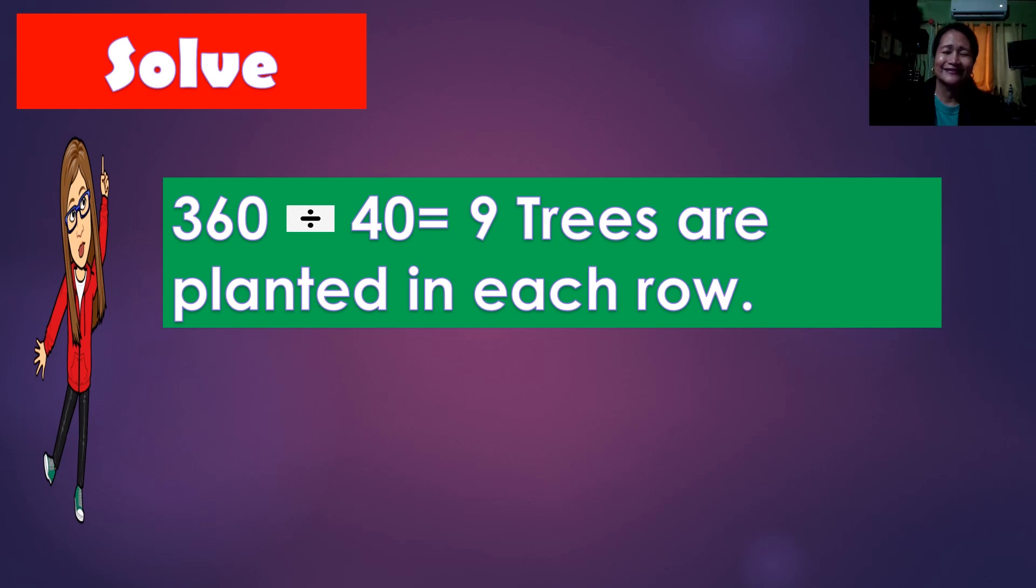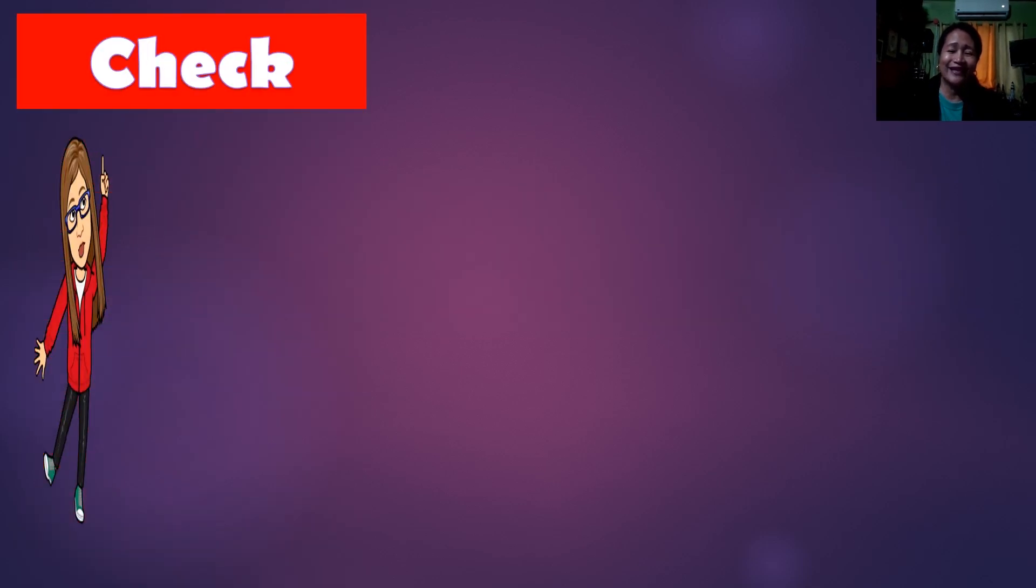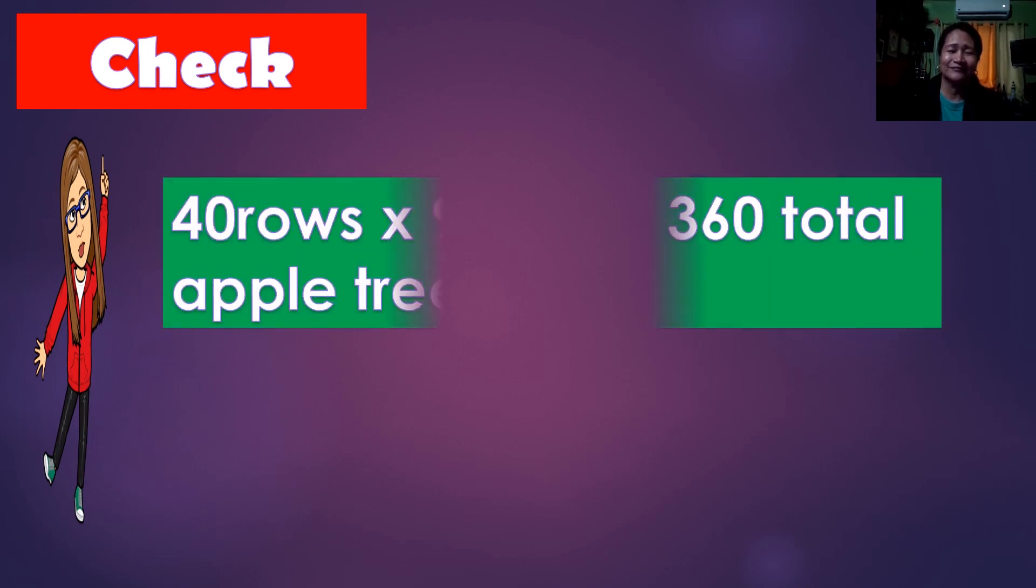So, let us check if this is correct. So, we have 40 rows times 9 trees in each row. This is equal to 360 total apple trees. Okay, very good.